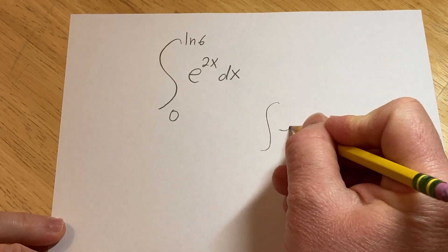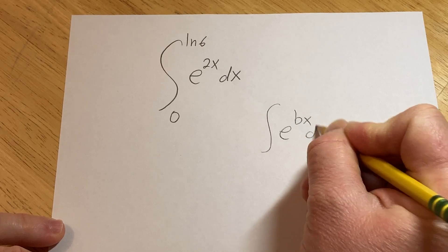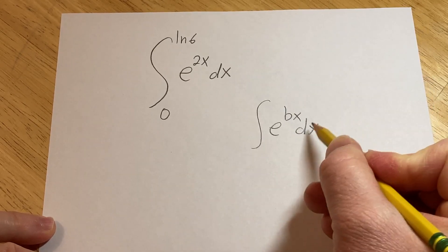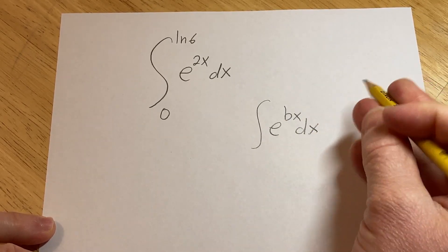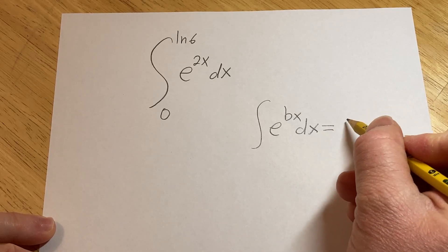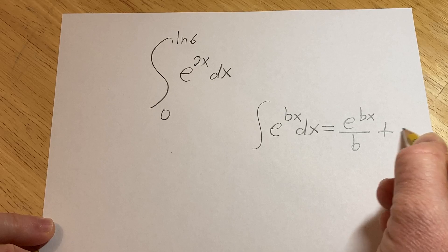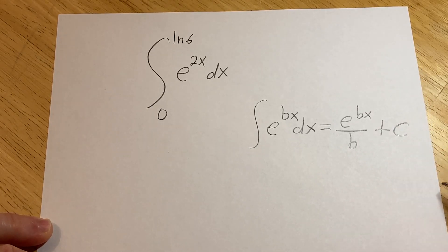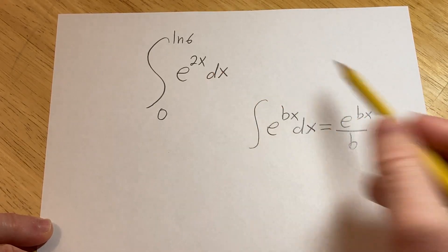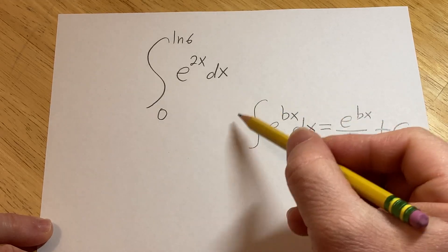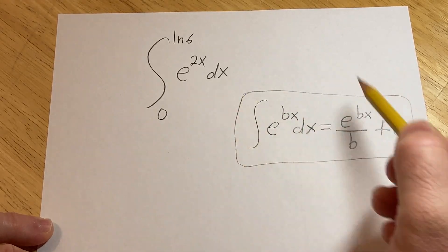The formula says if you have e to the bx with respect to x, and b is not 0, and you're trying to integrate this, it's actually super easy. It's simply e to the bx, then you divide by b, and you put a c here. That's your constant of integration. Since this is a definite integral, we don't need the c, but I wanted to include it in the formula for completeness.